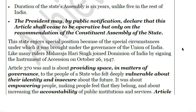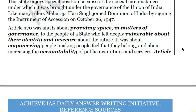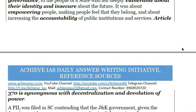Due to these provisions, the state enjoys special privileges. The purpose of Article 370 when it was included was to provide space in matters of governance to the people of the state. Because of the particular nature of J&K's accession, it was necessary to assure the state government and its citizens that the Union government would not cause any harm to the identity of this Muslim-majority state. Article 370 was providing space in governance and also addressing vulnerabilities felt by people about their identity and insecurity about their future. It was about empowering people, ensuring accountability of public institutions, and is synonymous with decentralization and devolution of power in Indian federalism.